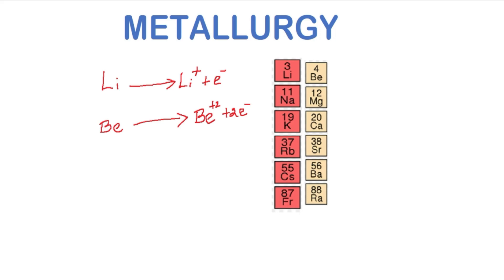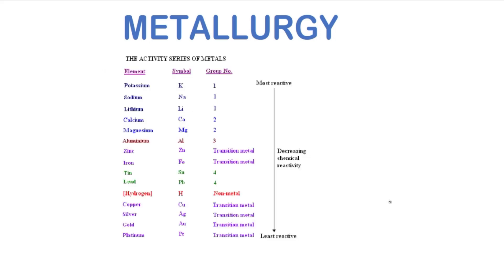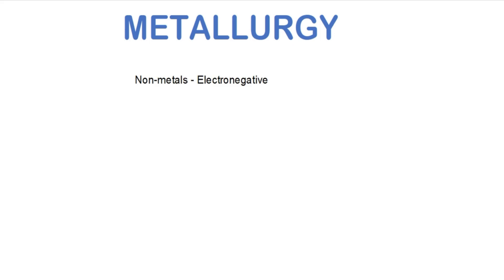When a metal loses electrons easily, we can say it is highly reactive, or its activity is high. Based on the electropositive nature of the metallic elements, we can predict an activity series. In this activity series of metals, the most reactive metal is at the top and the least reactive metal is at the bottom.